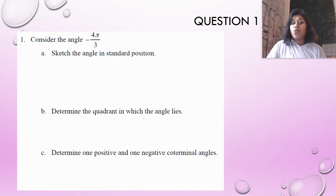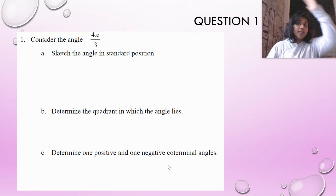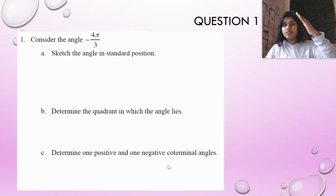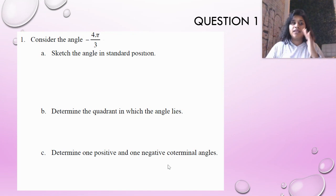figure out what quadrant it is, and then determine one positive and one negative coterminal angle. A coterminal angle is any angle occurring at the same position, but it has been moved by a whole circle. So you're literally adding and subtracting 360 or 2π, just a circle, that's literally all you do.